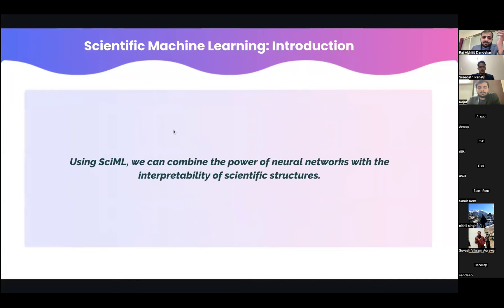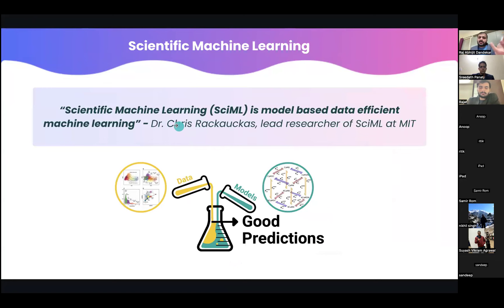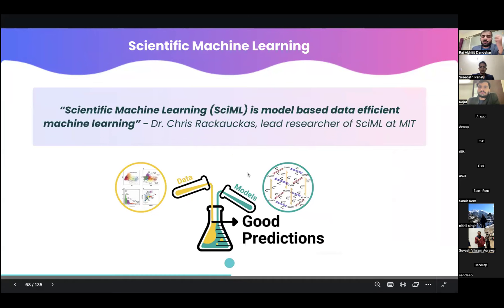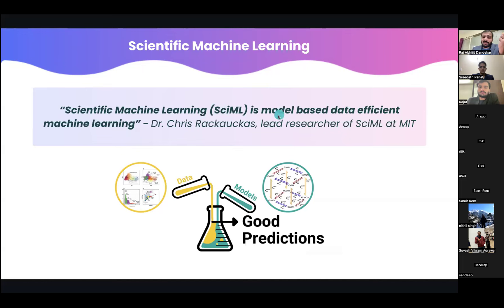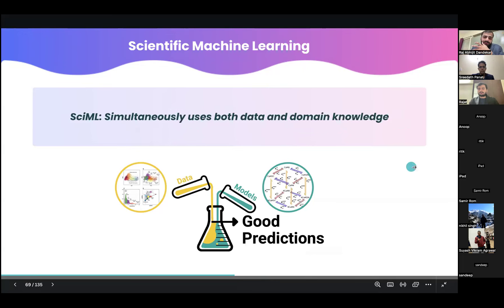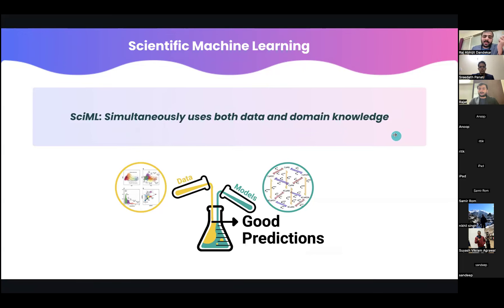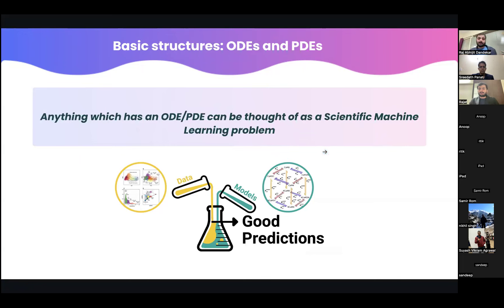My advisor Dr. Chris Rackauckas is the leading researcher in scientific ML in the entire world. He defines scientific ML as 'model-based, data-efficient ML.' For traditional ML you need huge amounts of data, but for scientific ML you have the model — you have some physics or scientific knowledge you already know, so you don't need as much data. Scientific ML uses both data and domain knowledge. Now, what do 'scientific structures' mean? Let's start with ordinary differential equations and partial differential equations — can everyone put in the chat whether they know about ODEs or PDEs?